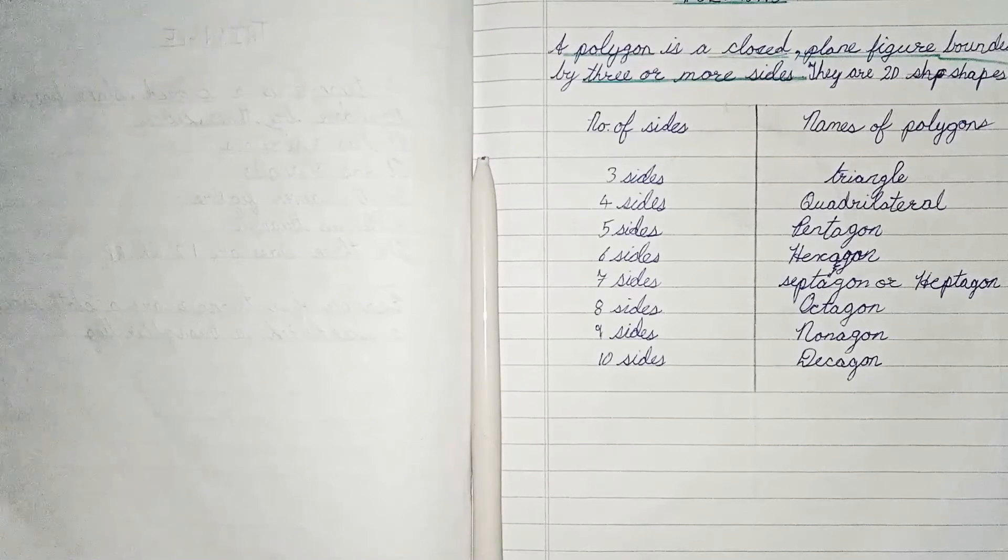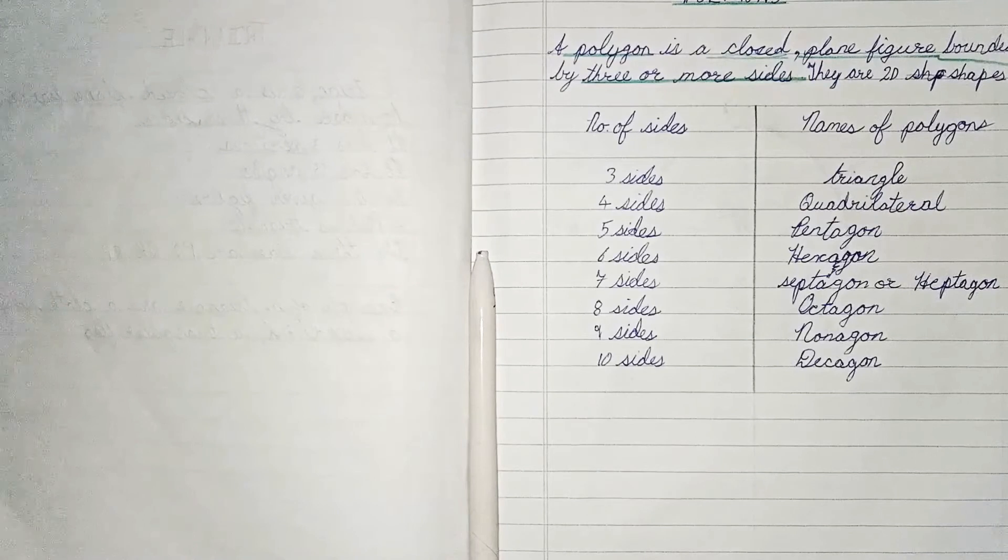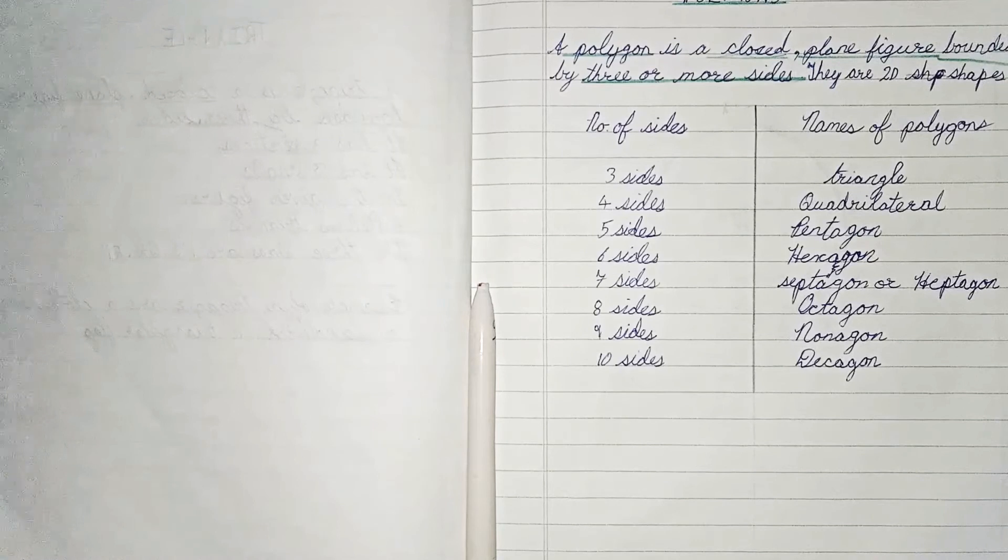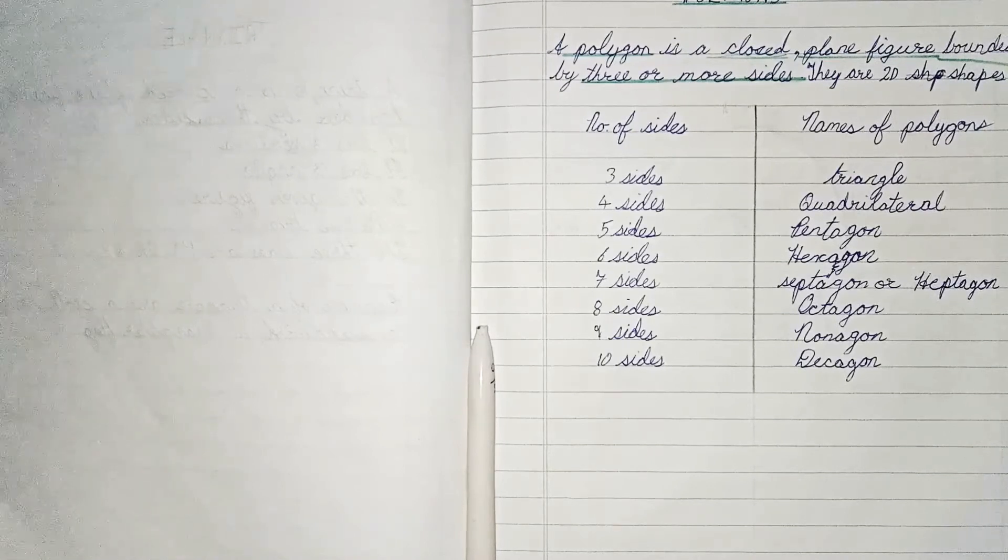For example, if there are three sides it is called triangle. For four sides we call it quadrilateral. For five sides it is called pentagon. For six sides it is called hexagon. For seven sides we call it heptagon or septagon. And for eight sides it is called octagon. For nine sides, nonagon, and for ten sides, decagon.